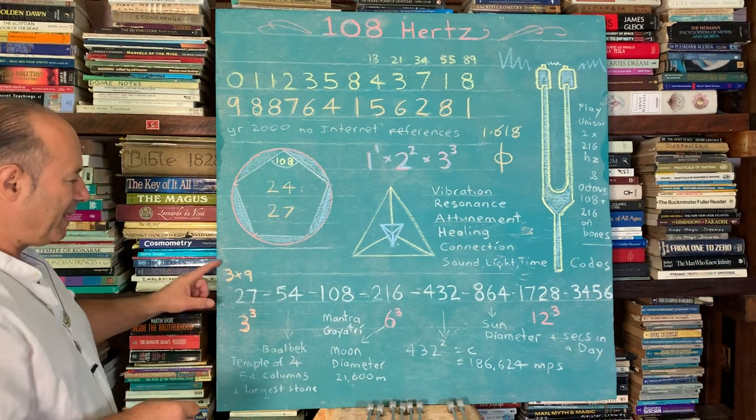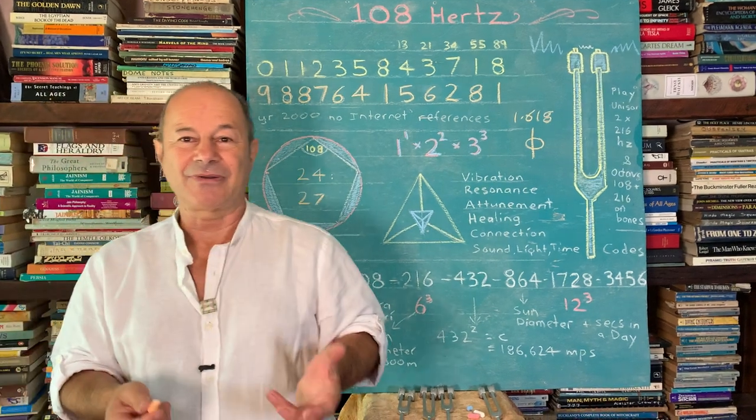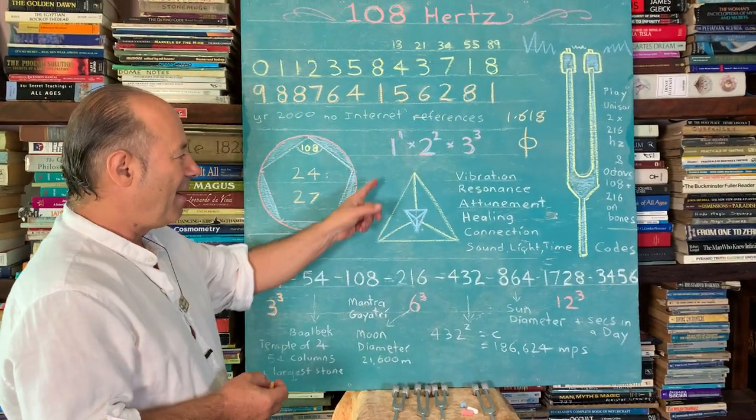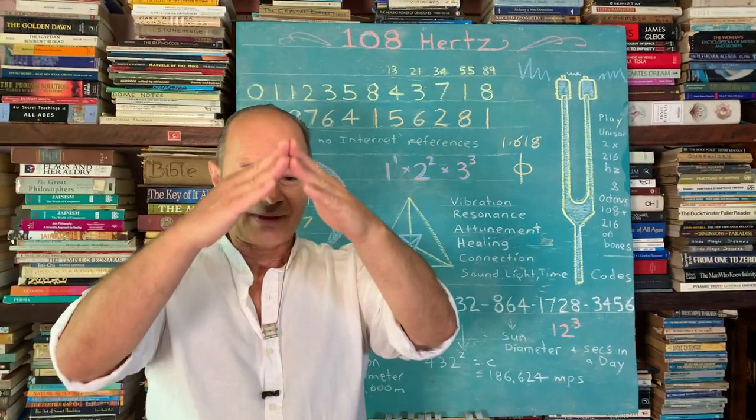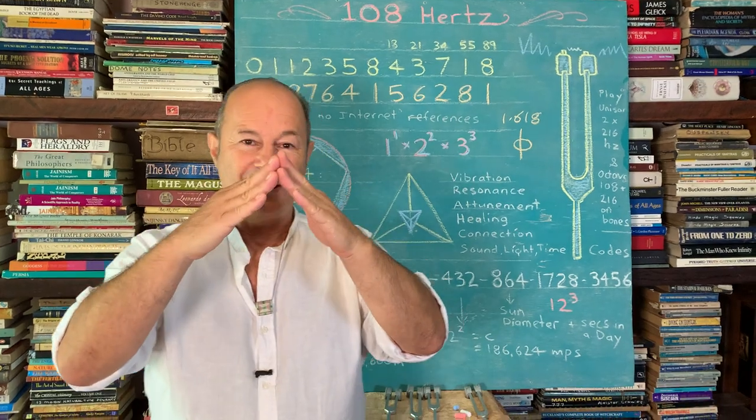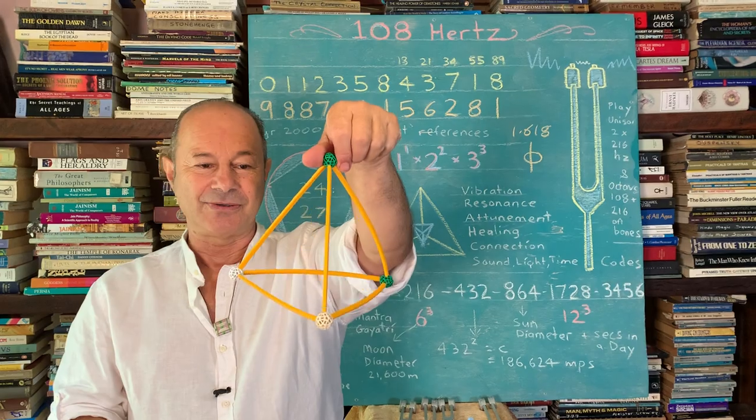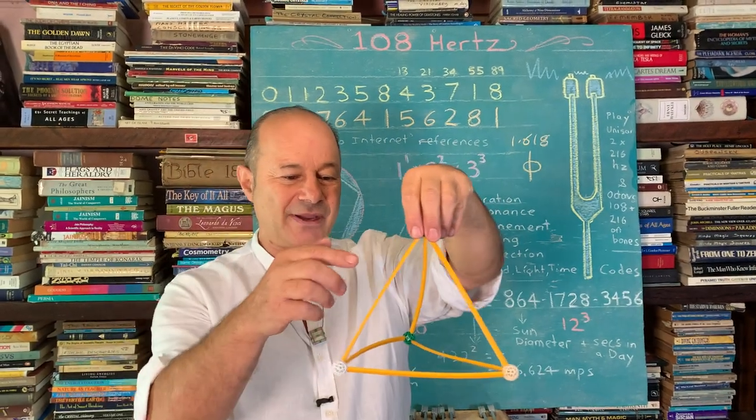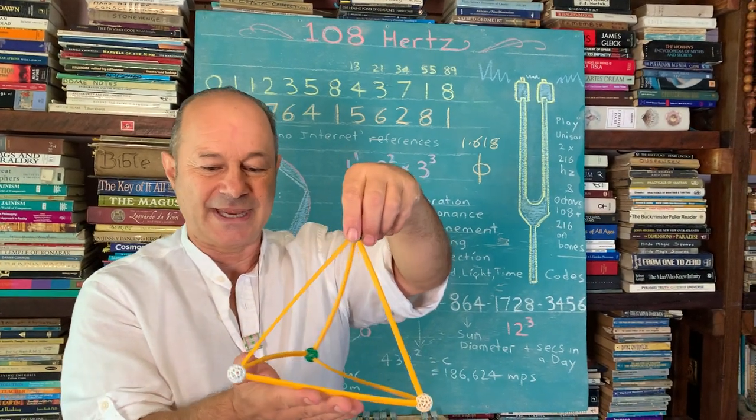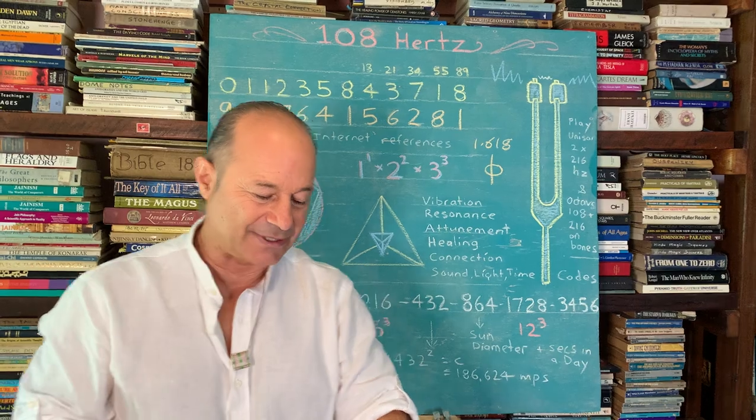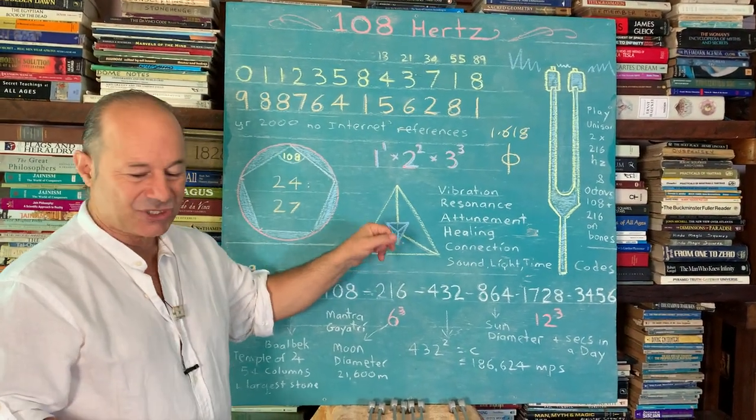Before I begin this sequence—a binary doubling sequence which reveals the fundamental harmonics of the universe and astronomy—I want to go back to the fundamental form. The first shape formed in 2D was a triangle, but in three dimensions, the first fundamental form is called the tetrahedron: three triangles and the base, four triangles at 60-degree angles.